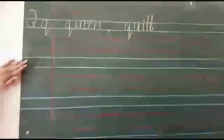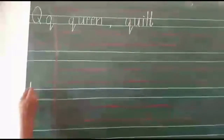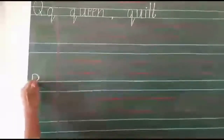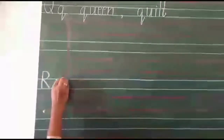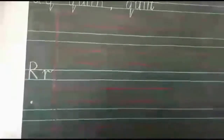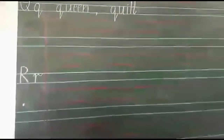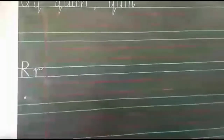Now, leave a line and write capital letter R, script letter R. R for rose, R for rabbit, R for ring, R for rainbow, R for rat.